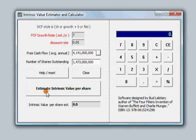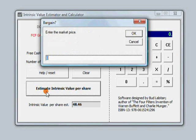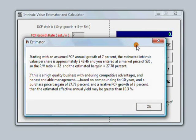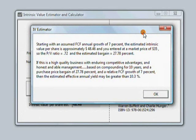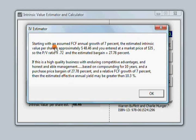And you entered a market price of $35, so the price-to-value ratio is 0.72, and you have an estimated bargain of around 27.7%. If this is a high-quality business with enduring competitive advantages and honest and able management, based on compounding for 10 years and a purchase bargain of 27.7%, and a relative free cash flow growth of 7%, then your estimated effective annual yield for that time period may be greater than 10.3%.